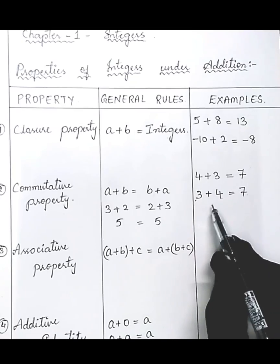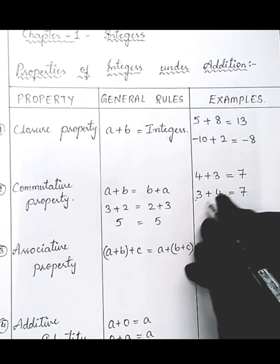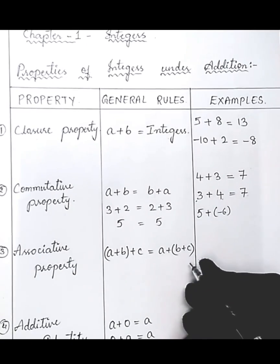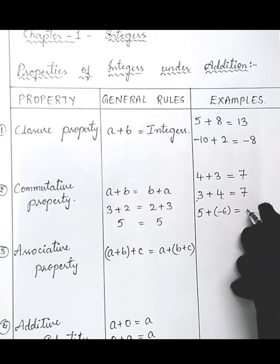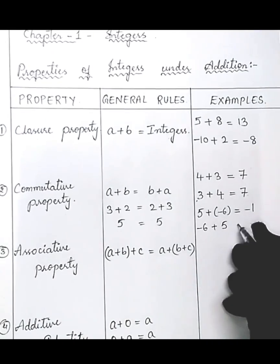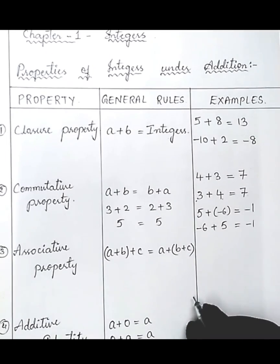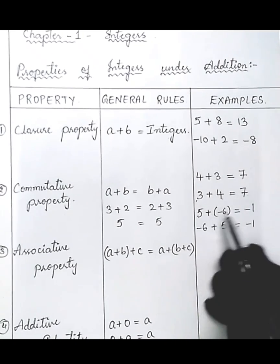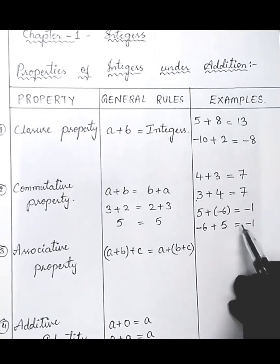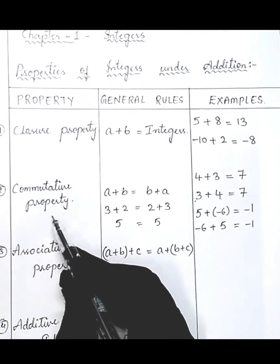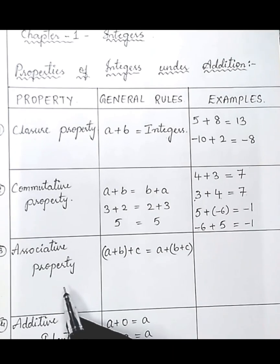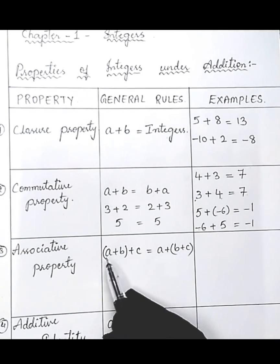Let's take one more example. Five plus minus six equals minus one, and minus six plus five also equals minus one. So whether you write a plus b or b plus a, both are equal to the same number. This is the commutative property.